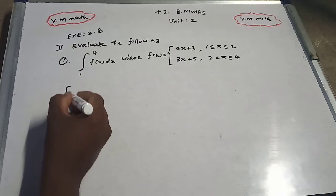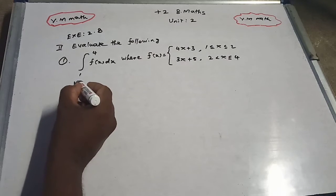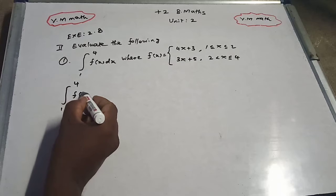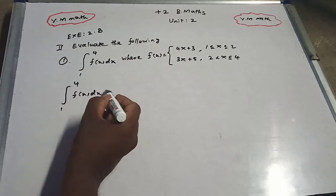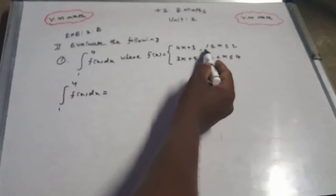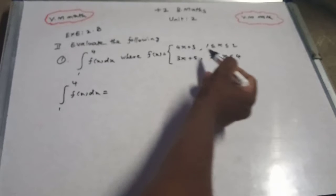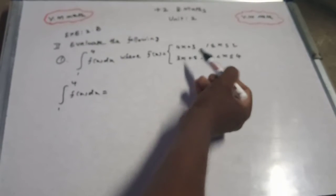So the integral from 1 to 4 of f(x)dx becomes: the function f(x) is 4x plus 3 from 1 to 2, and 3x plus 5 from 2 to 4.